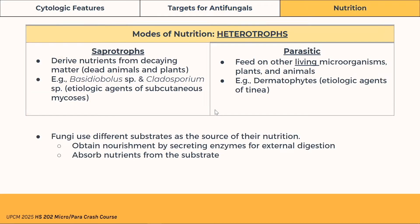Let's discuss the nutrition of fungi. They're heterotrophs, so they need their environment for nutrients. They can be classified as saprotrophs, which derive nutrients from decaying matter, such as Basidiobolus and Cladosporium, which are etiologic agents of subcutaneous mycoses. They can also be parasitic and feed on living organisms, such as the dermatophytes, which are the etiologic agents of tinea. They secrete enzymes for digestion and then absorb nutrients from the substrate.